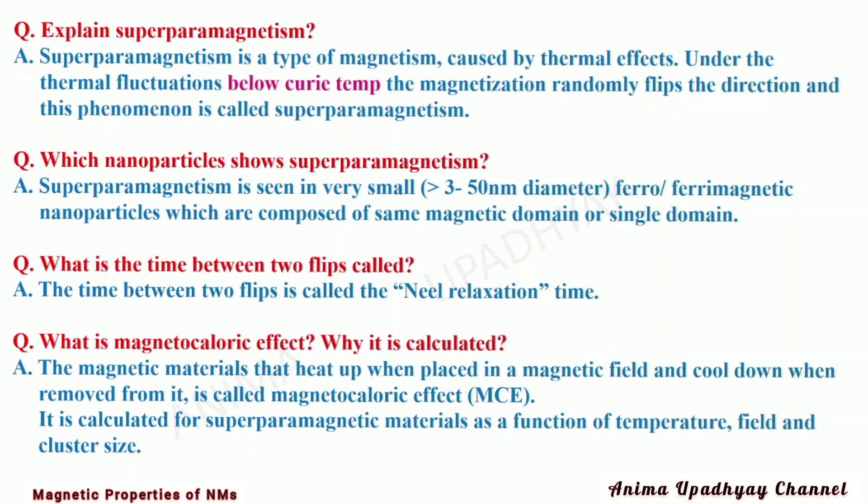Explain superparamagnetism. Superparamagnetism is a type of magnetism caused by thermal effects — thermal means temperature. Under thermal fluctuations below the Curie temperature, the magnetization randomly flips direction, and this phenomenon is called superparamagnetism. Superparamagnetism is seen in very small particles less than 3 to 50 nanometers in diameter. It is ferro and ferrimagnetic nanoparticles composed of a single magnetic domain that show superparamagnetism.